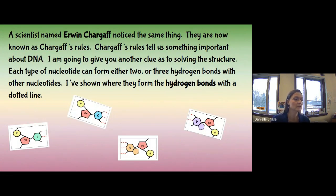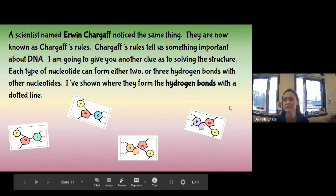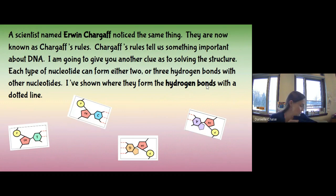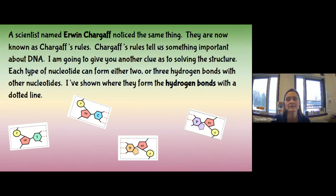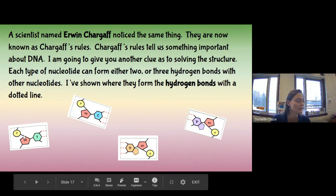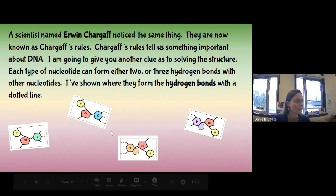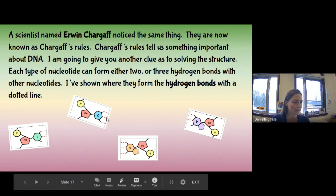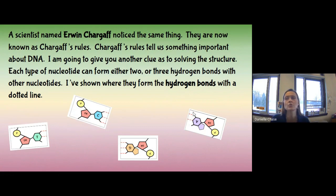Here's another clue about DNA structure: each of the four types of nucleotides can form either two or three hydrogen bonds with other nucleotides. The dotted lines show where hydrogen bonds form. Thymine has two hydrogen bonds, cytosine can form three, guanine can form three, and adenine can do two hydrogen bonds.